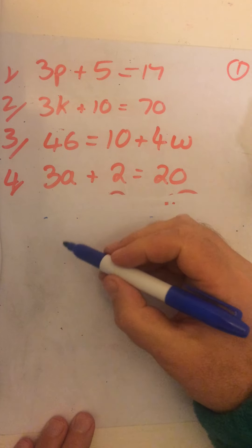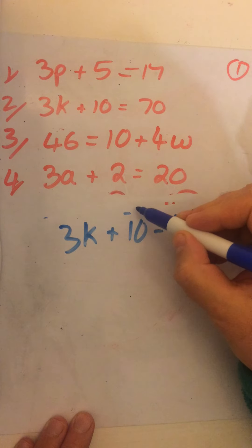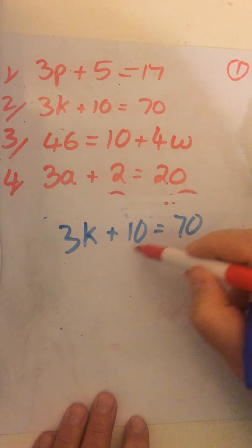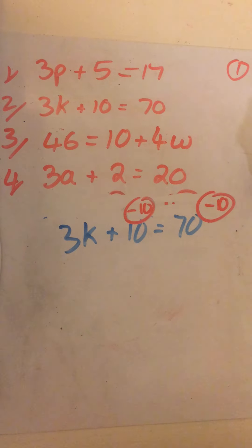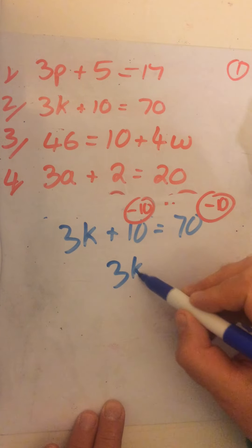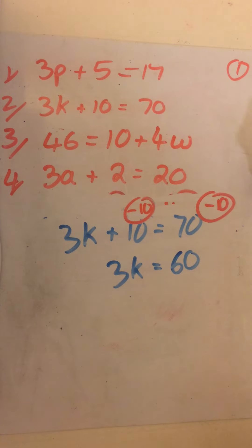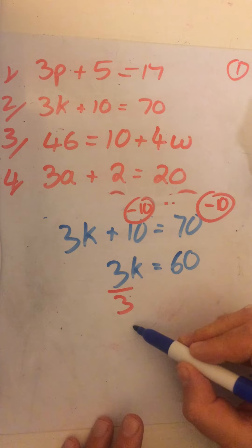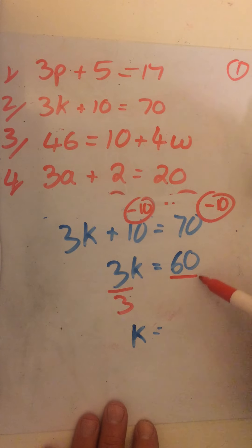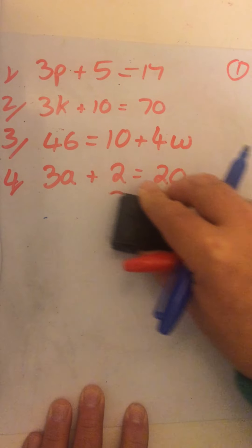Mark these as you go along, please. Next: 3k plus 10 equals 70. I'm going to take away 10 to get rid of the positive 10, and do the same on the other side. That leaves me with 3k equals 60. Now I divide by 3 to leave me with k. How many 3s in 60? That's 20. k equals 20.